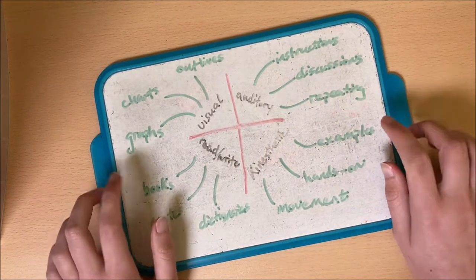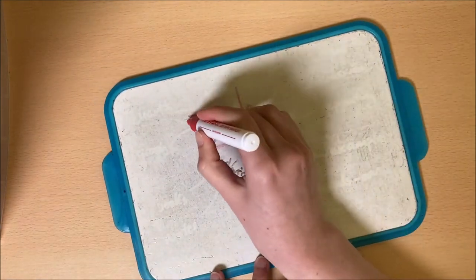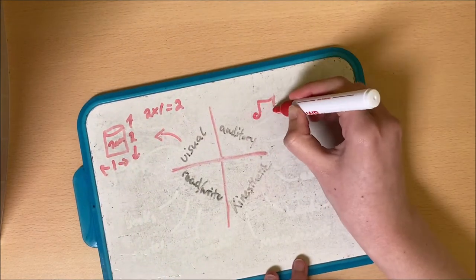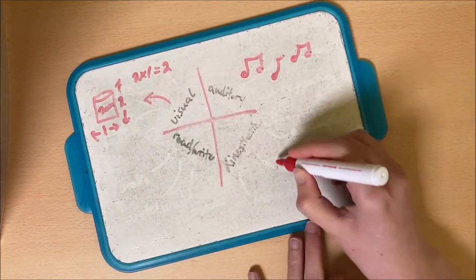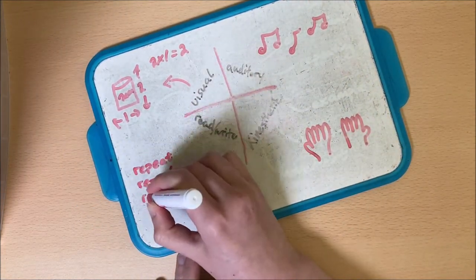So, you might wonder what the heck all of this is about and what good it will do for you to know this. But finding out what type of learner you are immediately gives you an advantage while studying because you'll know from the get-go what you should be doing to maximize the amount of information that you can take in.